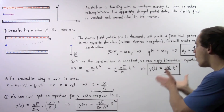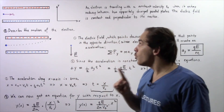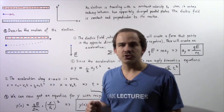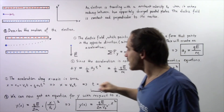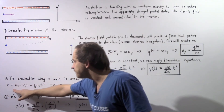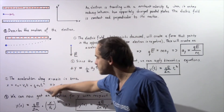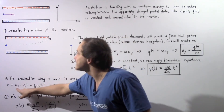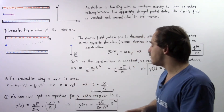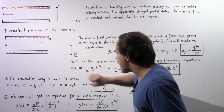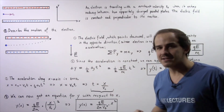Now we want to represent y in terms of x. The acceleration along the x-direction is zero because velocity is constant along the x-axis. Applying the kinematics equation and setting x0 and AX to zero, we get x equals V0 multiplied by T. Solving for T, we see that T equals x divided by V0, which is a constant.